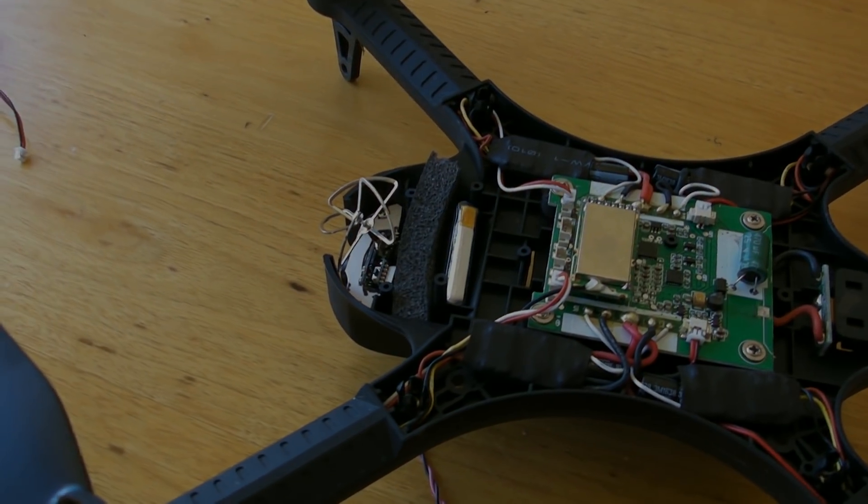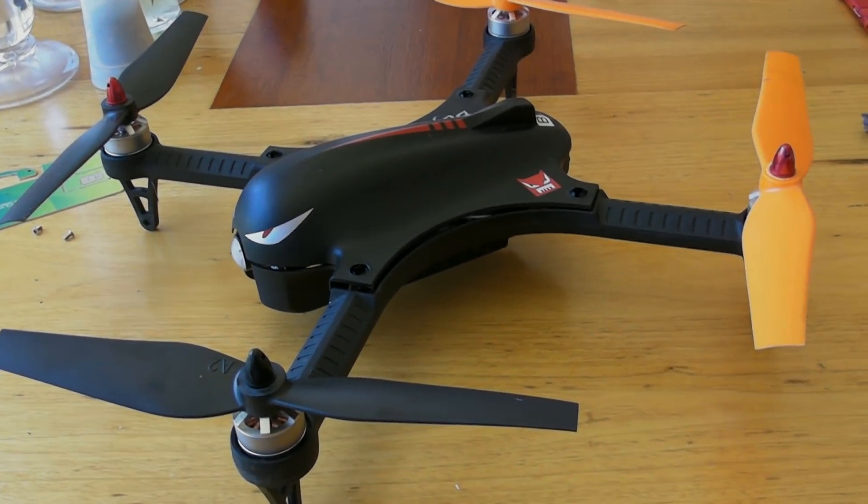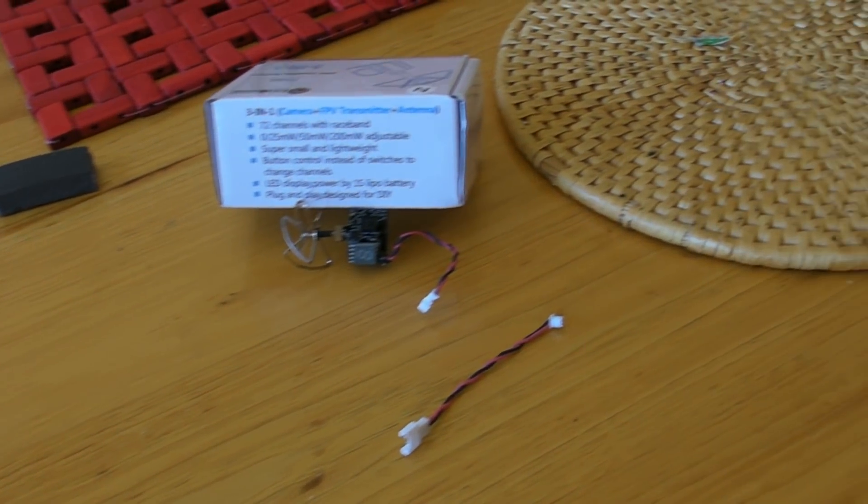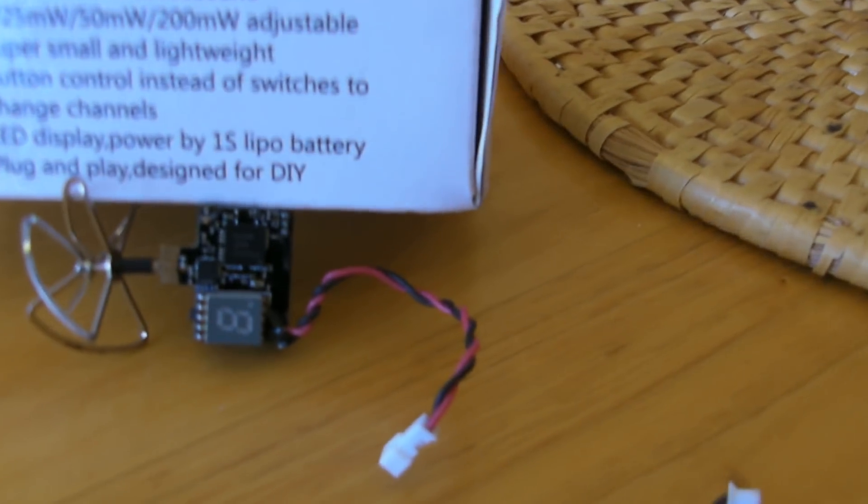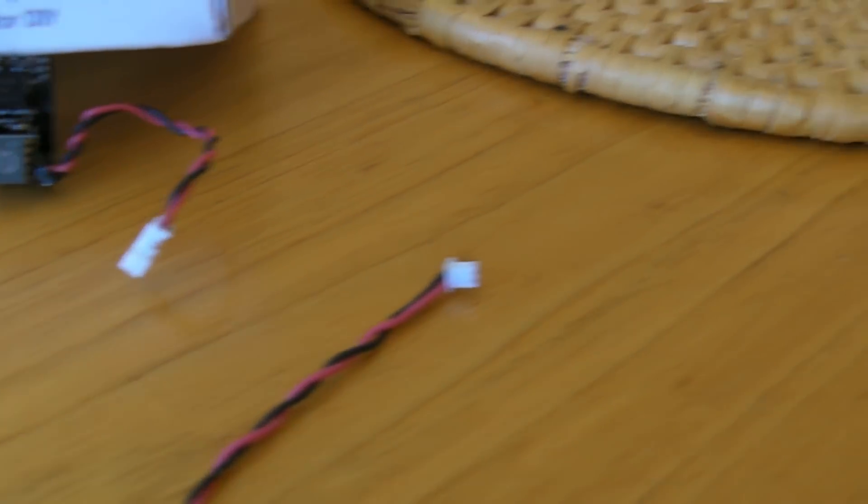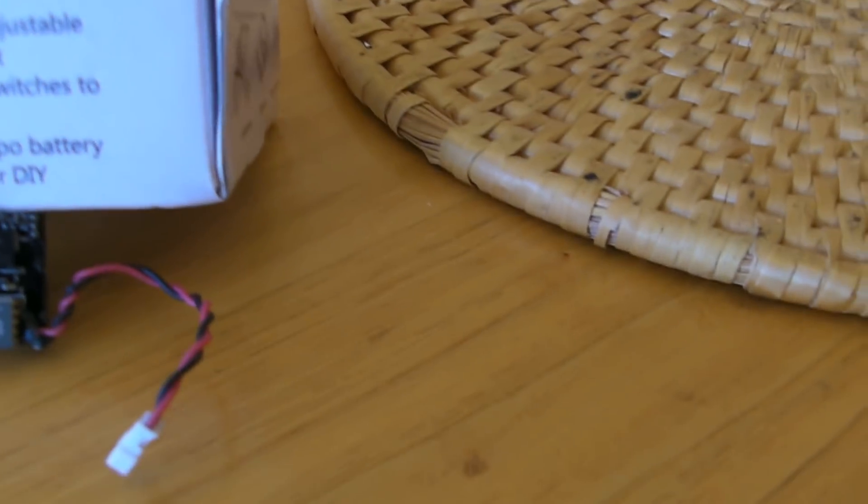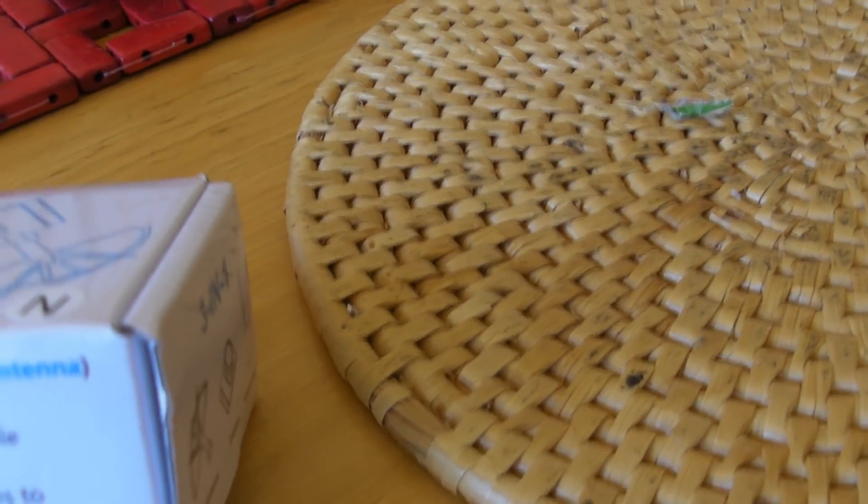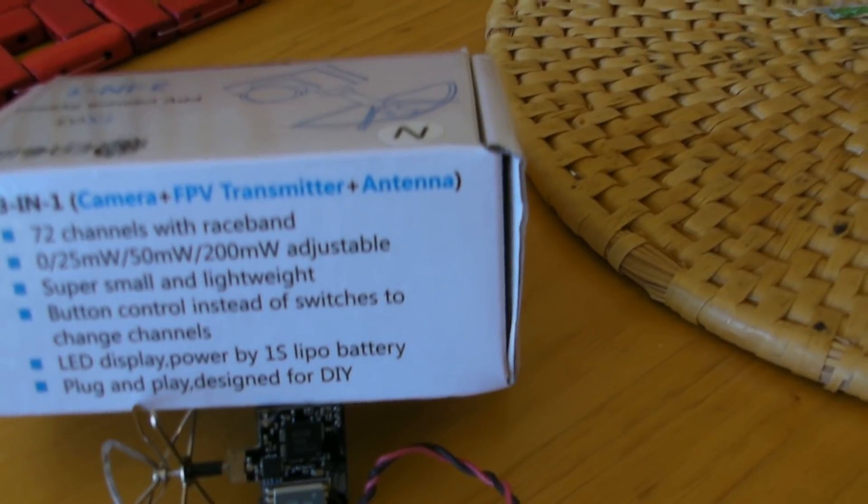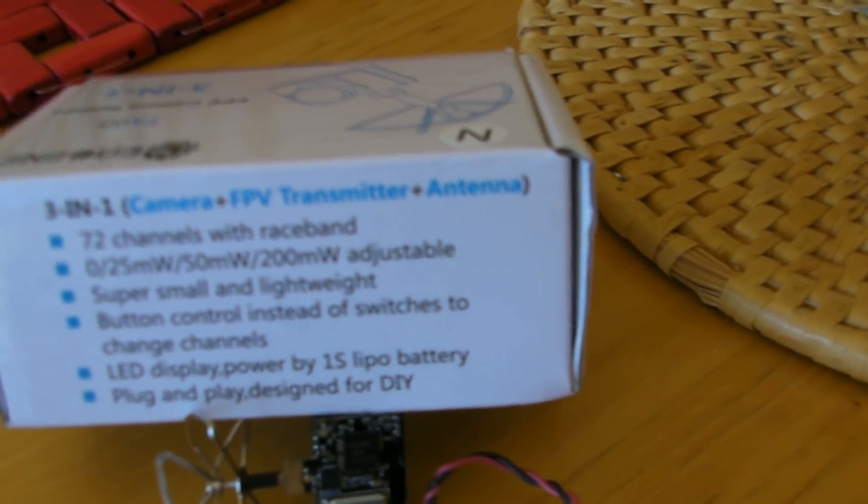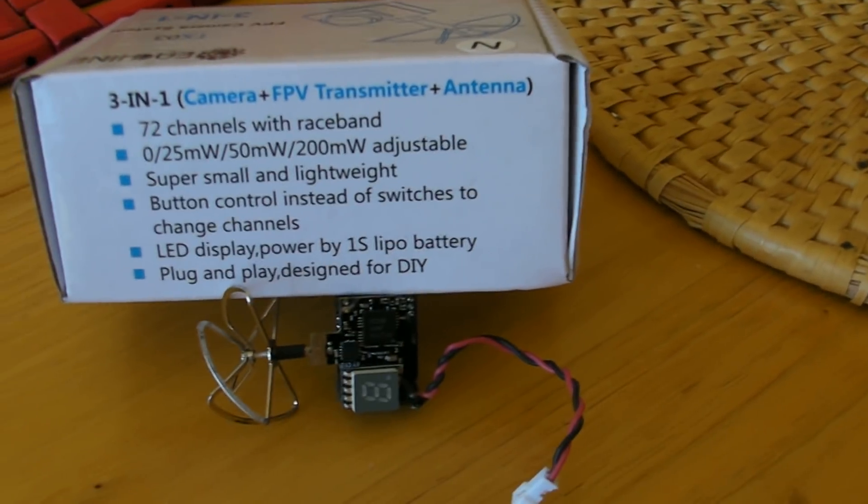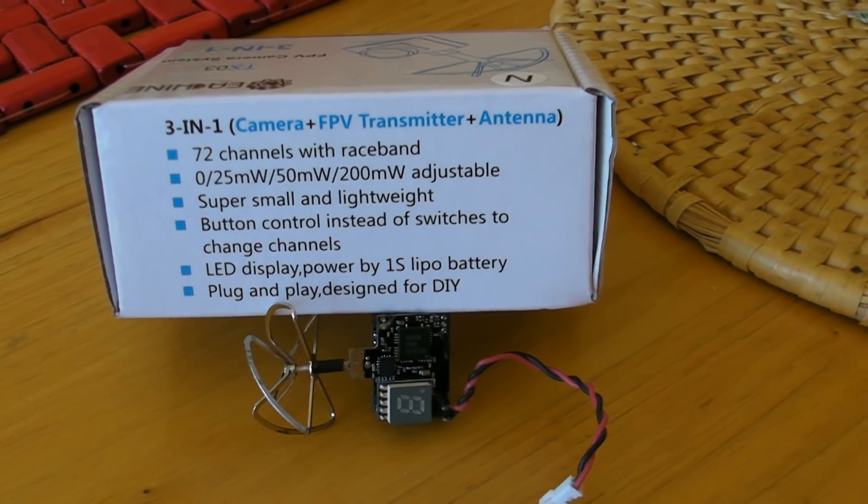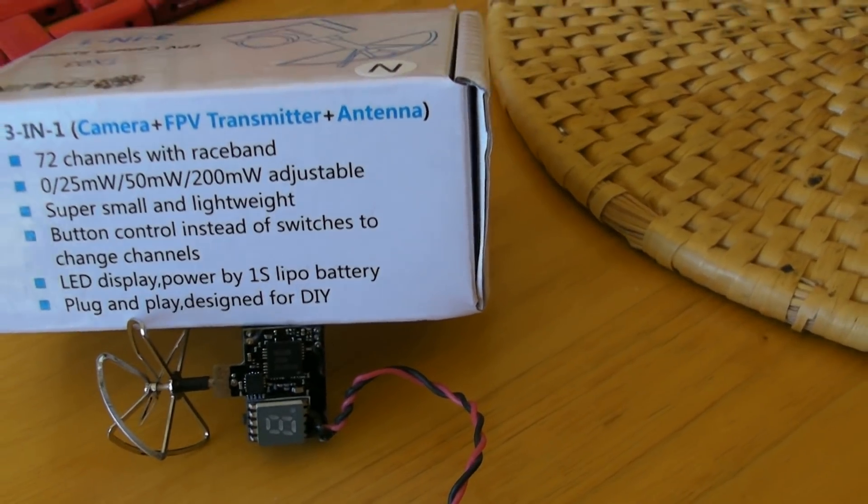Starting off with the eShin TXO3 camera, this is what it came with: the camera itself, a little cloverleaf antenna, and this cable. You can power it between 2.5 and 5.5 volts. There's a lot of stuff on YouTube about how to configure this camera, how I set it to maximum power 200 milliwatts and the channel I wanted.